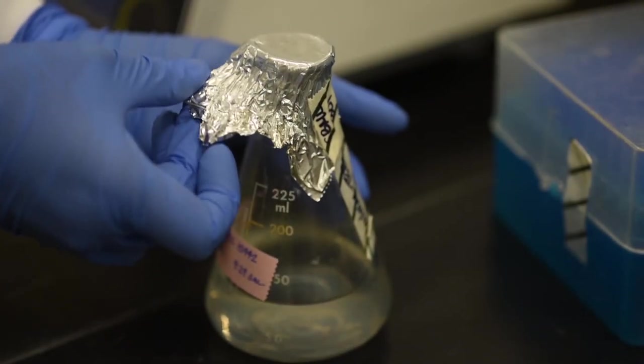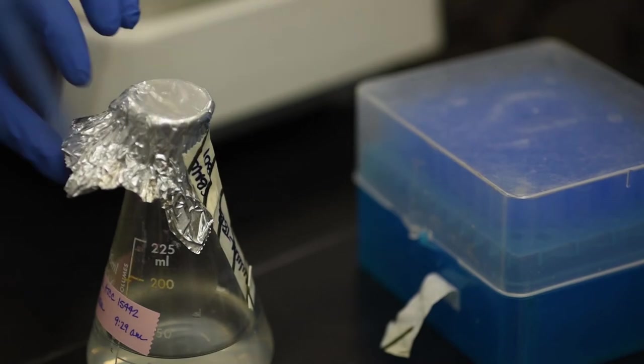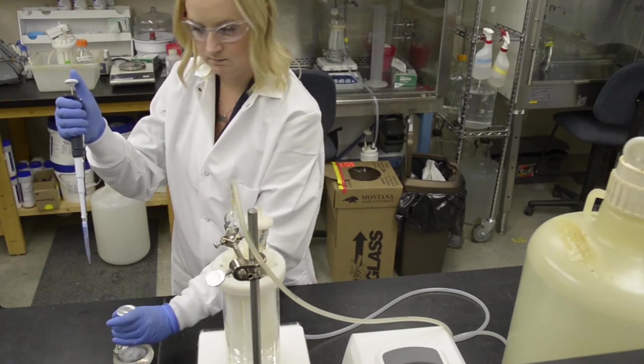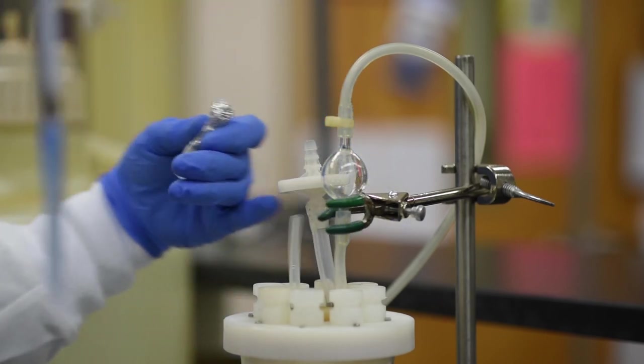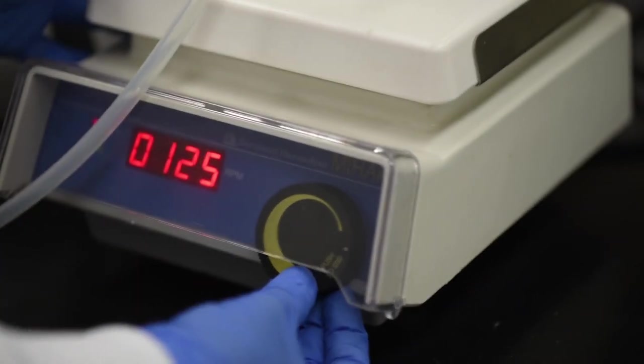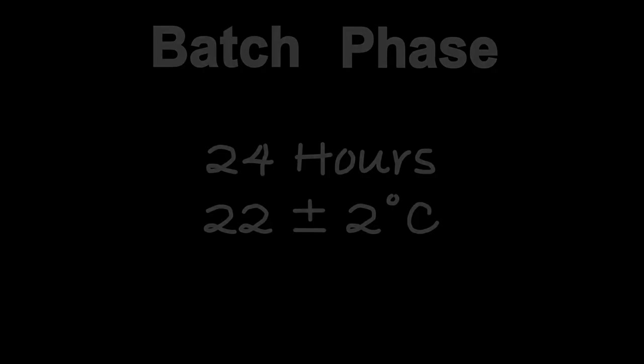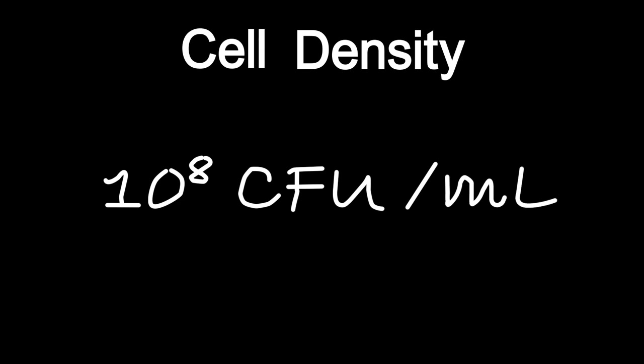The inoculum is 100 mg per liter TSB inoculated from a frozen stock culture and incubated for 22 plus or minus 2 hours at 36 plus or minus 2 degrees Celsius, 125 RPM. Batch biofilm growth begins when one milliliter of the inoculum is added through the inoculation port. Turn the stir plate on and set to 125 RPM. Incubate the reactor in batch phase for 24 hours at 22 plus or minus 2 degrees Celsius. The cell density of the inoculum should be approximately 10 to the 8th colony forming units per milliliter and should be confirmed by serial dilutions and plating.